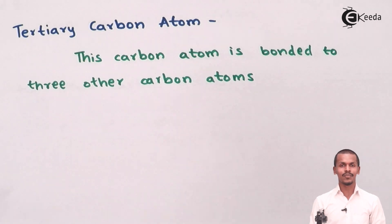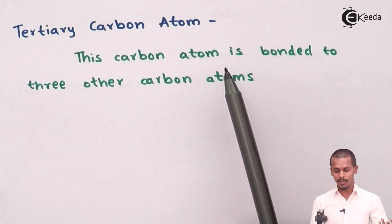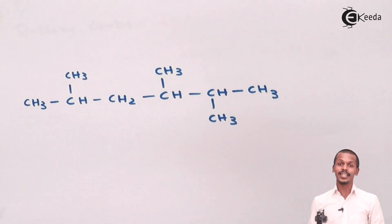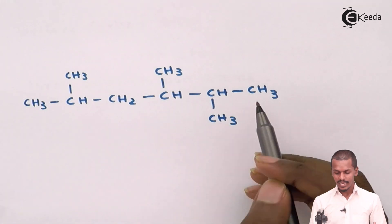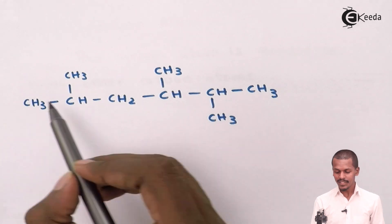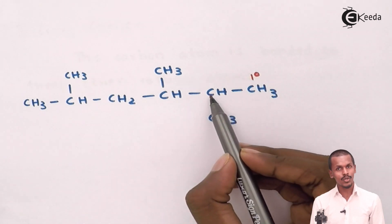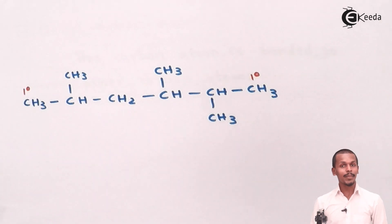Just like primary carbon is attached to one carbon atom directly, and secondary is attached to two carbons directly, a tertiary carbon atom is bonded to three other carbon atoms. Let me give you an example. First let us identify primary and secondary atoms. The terminal carbon atoms are primary, and this methyl group is attached to only one carbon atom directly, making it a primary carbon atom.